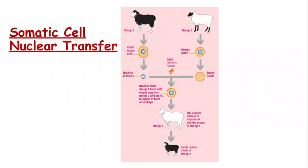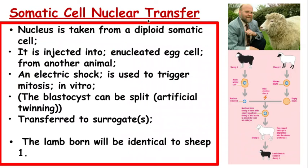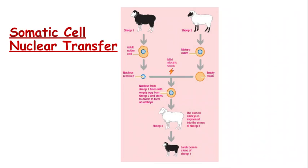We also have somatic cell nuclear transfer that we need to be aware of. What we do here is take the nucleus from an individual chosen for a certain trait such as milk yield, fur quality, or meat quality. The nucleus is taken from a somatic cell, which is an adult cell. We then take an egg cell from another organism of the same species and remove the nucleus of that egg, giving us an empty ovum. The majority of the DNA will be from the individual with the characteristic you want to clone.